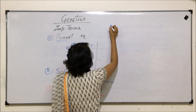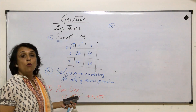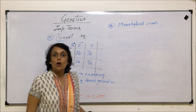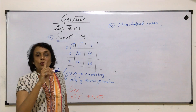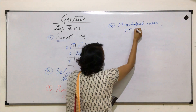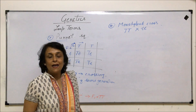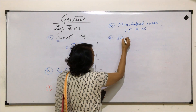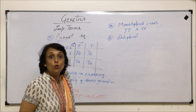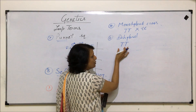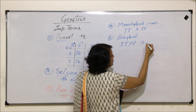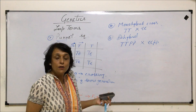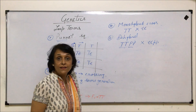Another term related to the cross is monohybrid cross. A monohybrid cross is when we are crossing plants and checking only one character. If we take a tall plant crossed with a short plant, we have discussed only one character, so this cross is termed a monohybrid cross. For a dihybrid cross, we are talking of two characters — for example, homozygous tall and homozygous purple plant crossed with a short and white plant — considering height and color at the same time.